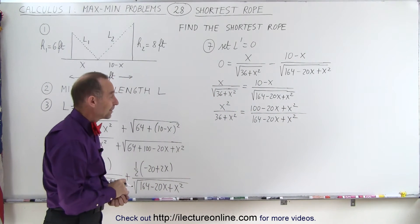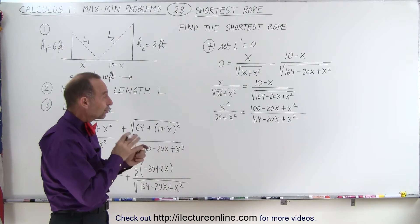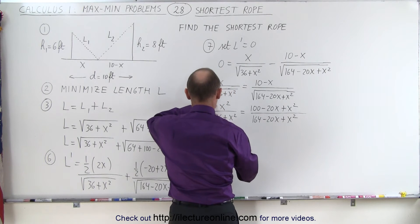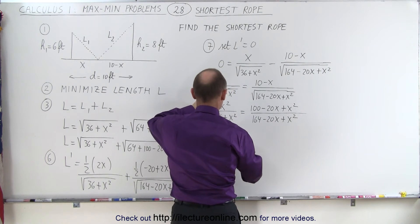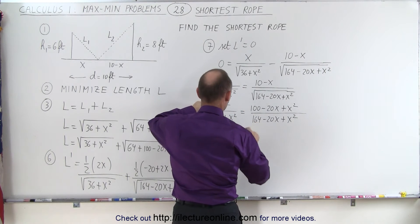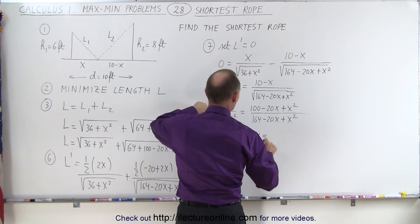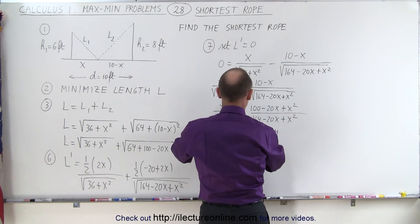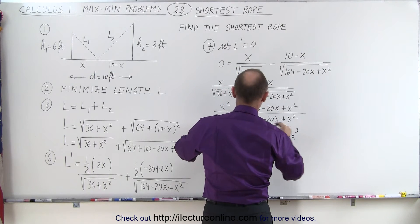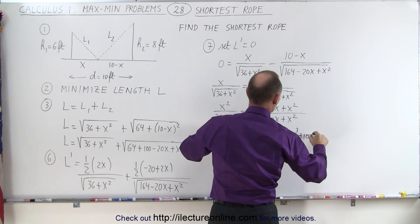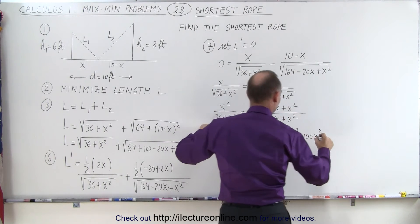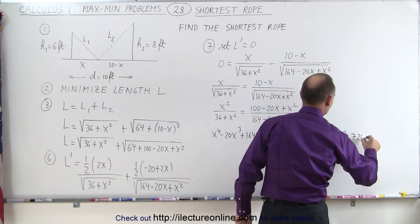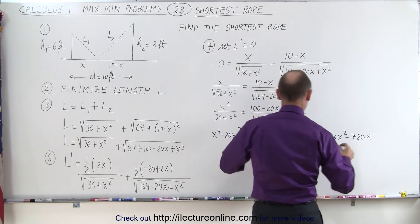Now we cross multiply. It's not going to be as bad as you think because some things will cancel out. We get x squared times (164 minus 20x plus x squared): that gives x to the fourth, minus 20x cubed, plus 164x squared. On the right side, (100 minus 20x plus x squared) times (36 plus x squared): that gives x to the fourth, minus 20x cubed, plus 100x squared, plus 36x squared, minus 720x, plus 3600.